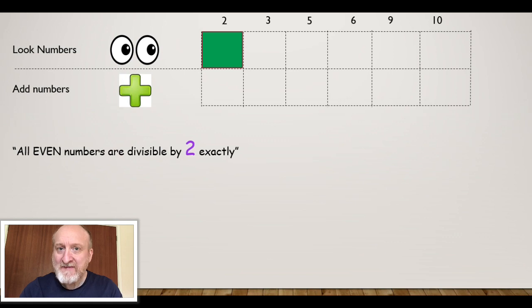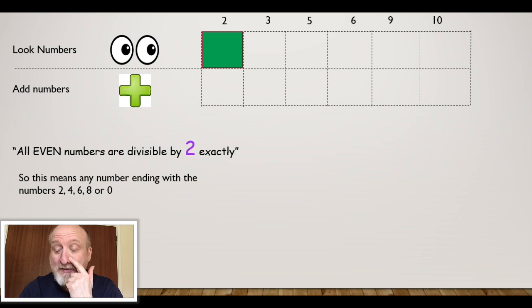The divisibility rule for 2 is that all even numbers are divisible by 2. What does that mean? It means that if it's an even number it ends with 2, 4, 6, 8, or 0. That's an even number as well.